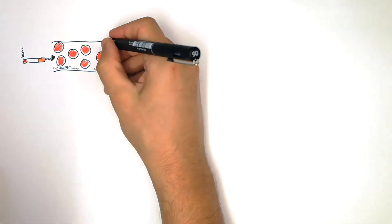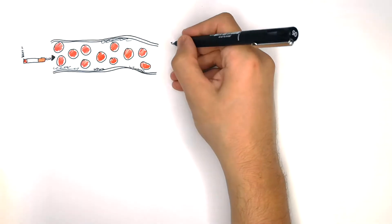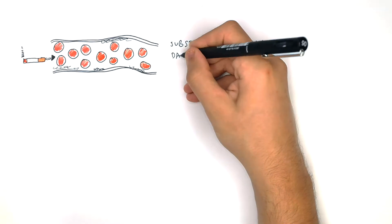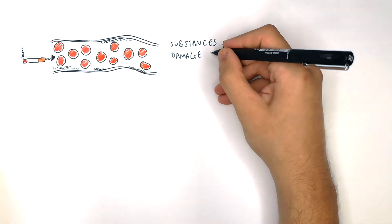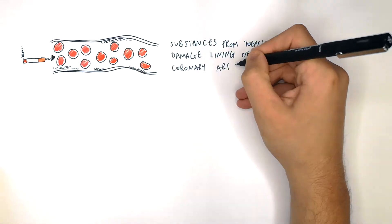Substances from the smoke, from the tobacco, will damage the lining of the coronary artery.